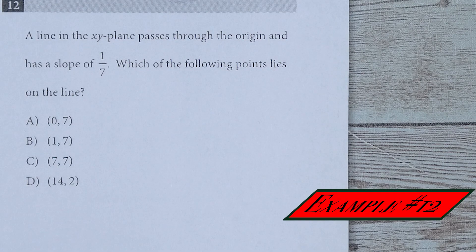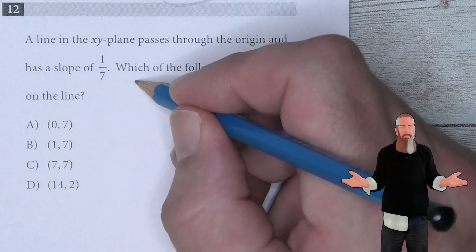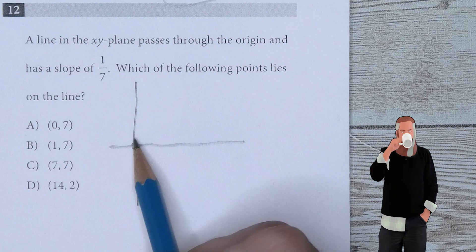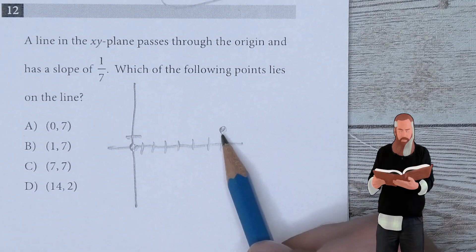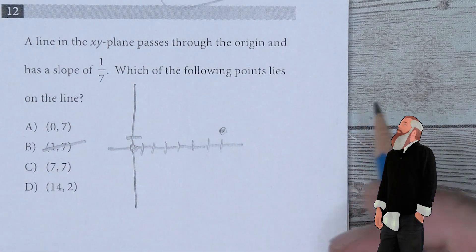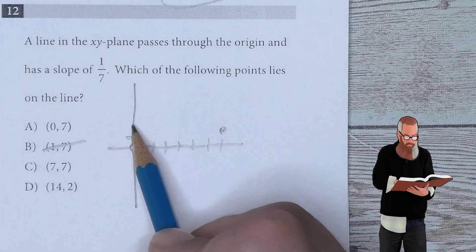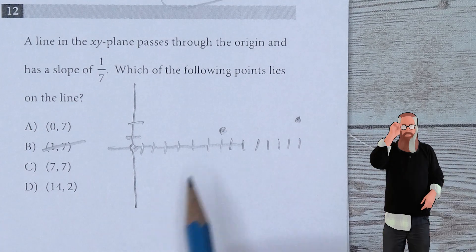A line in the xy plane passes through the origin and has a slope of 1 over 7. Which of the following points lies on the line? Looking at this as a graph, going through the origin, up 1 and right 7 gives the point (7, 1). Going up 1 and right 7 again gives the point (14, 2). So 14, 2 is the answer.